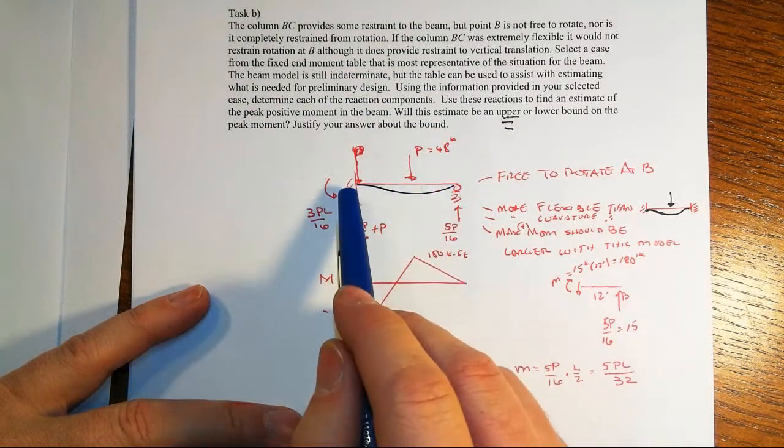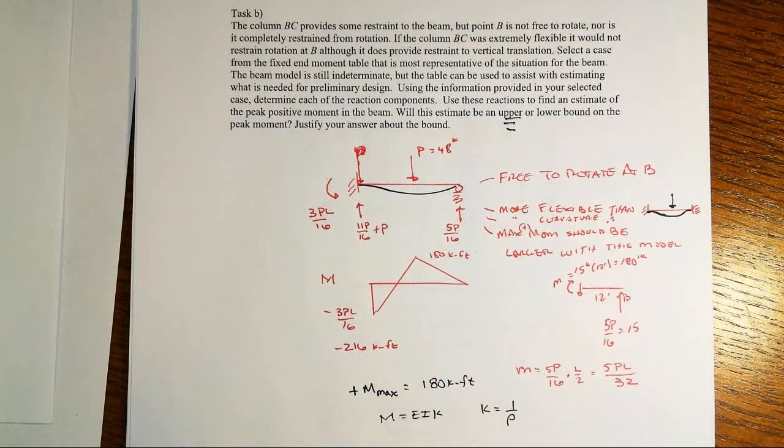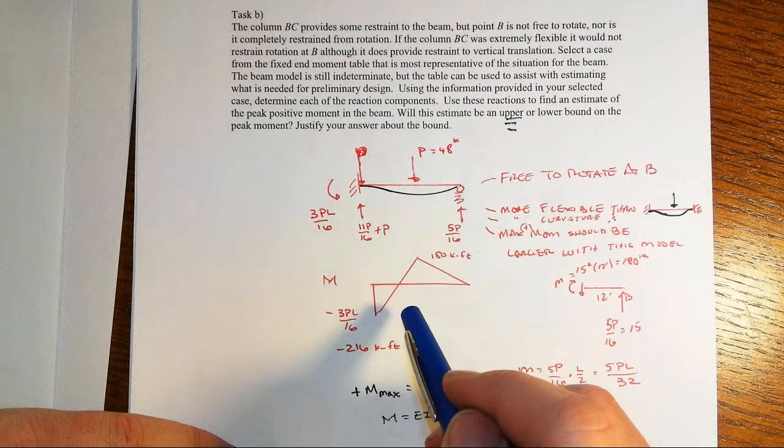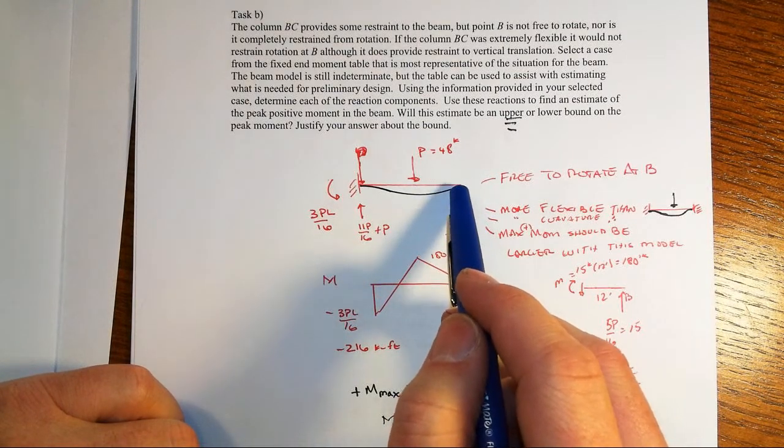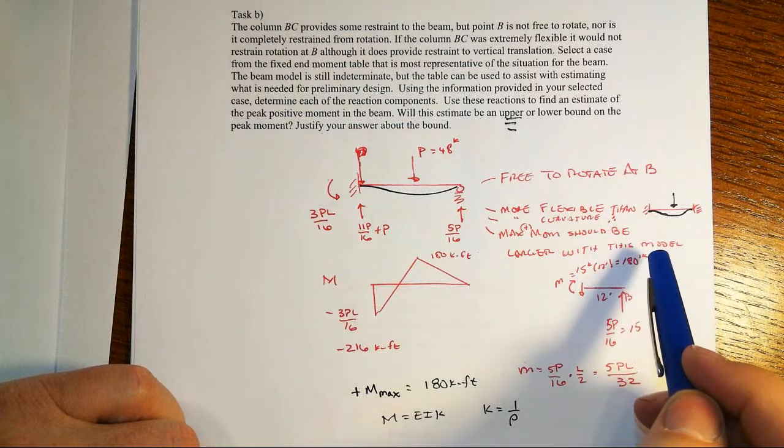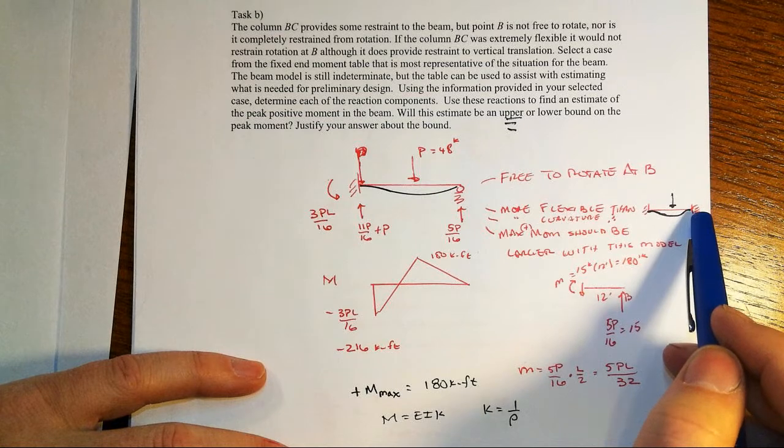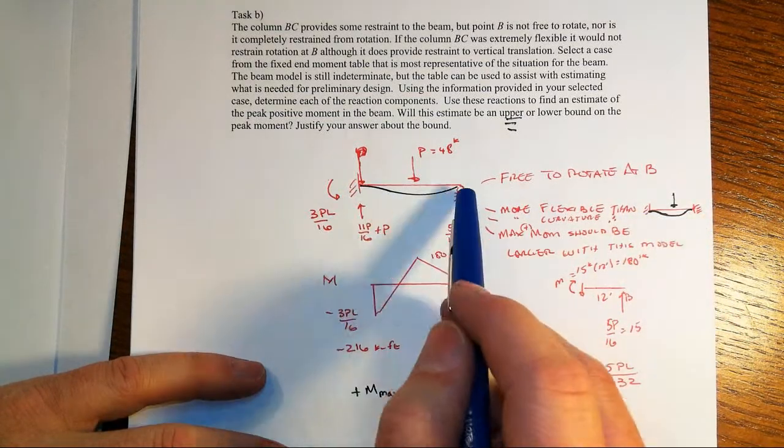But at the right we have a column. And that column is going to provide some sort of rotational restraint to the end of this beam. And the two extremes are that it provides free restraint or it provides free restraint, meaning it provides no resistance to rotation or it provides total resistance to rotation. So that's either fixed-fixed or fixed roller.